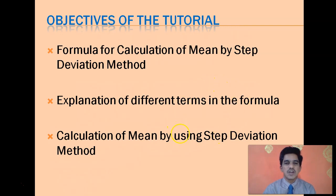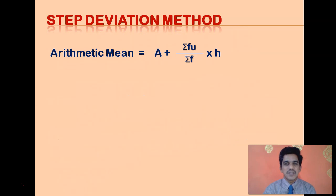Now first I will present you the formula for calculation of mean of a group data using step deviation method. This is the formula we have to use. Arithmetic mean is given by A plus sigma fu divided by sigma f, this is multiplied by h. So A plus sigma fu by sigma f into h. Now let us see what are the terms that are involved in this formula.